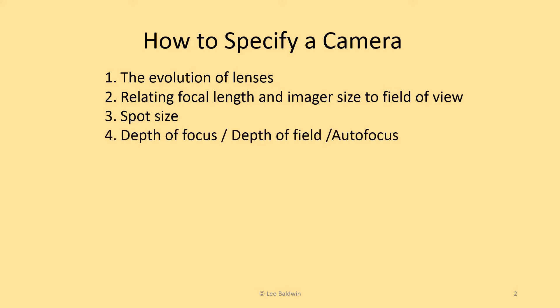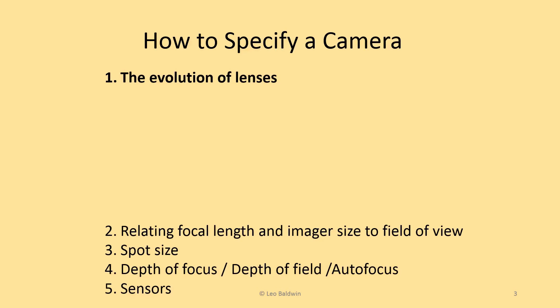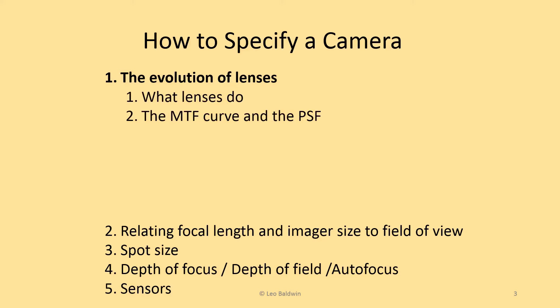We'll talk about depth of focus, depth of field, and also out-of-focus behavior. We'll talk about sensors — specifying the sensor and the lens so they work well together. So, the evolution of lenses: we're going to go through what lenses do, the MTF (modulation transfer function), and the point spread function. We'll start with the pinhole camera. We don't use those very often, but it's a very useful construct for thinking about even cameras with lenses.